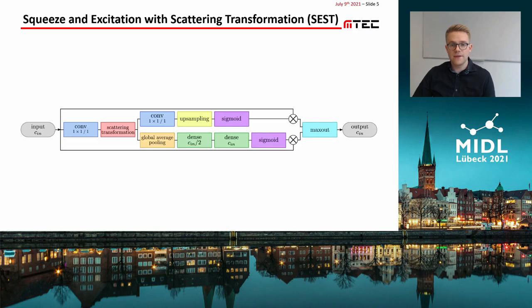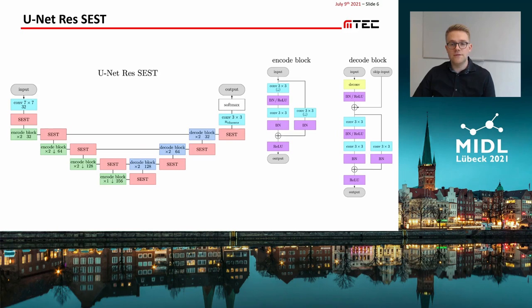This block is depicted here. The scattering transformation outputs 49 channels in our case, and these serve as input to the spatial and channel attention path. Because squeeze and excitation with scattering transformation is a quite long term, we abbreviate it as CEST.